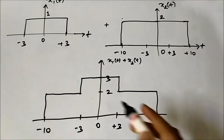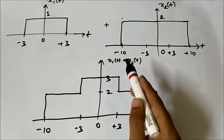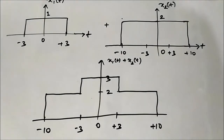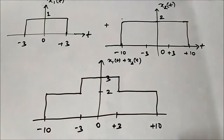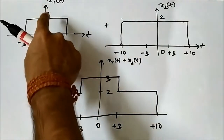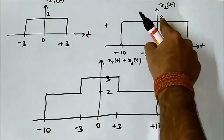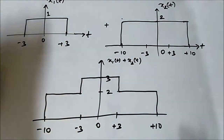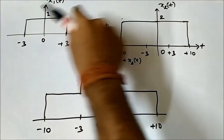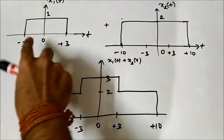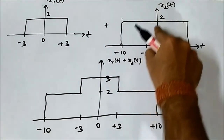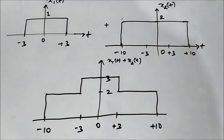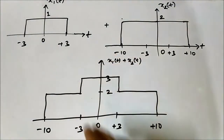So this is the shape of the signal x1(t) plus x2(t). Two rectangular pulse functions — x1(t) of amplitude 1 and x2(t) of amplitude 2. From minus 10 to minus 3 and from plus 3 to plus 10, x1(t) is 0, so the result is 0 plus 2 equals 2. From minus 3 to plus 3, it is 1 plus 2 equals 3.